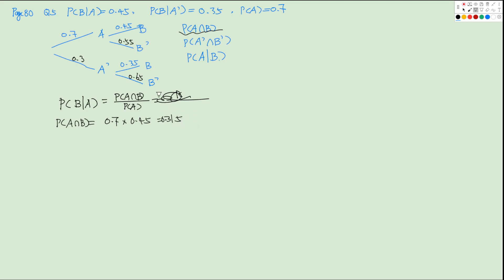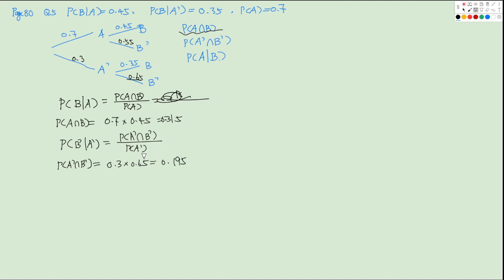For the second probability, P(A'∩B') = P(A') × P(B'|A') = 0.3 × 0.65 = 0.195.